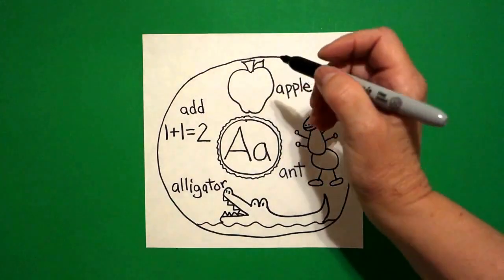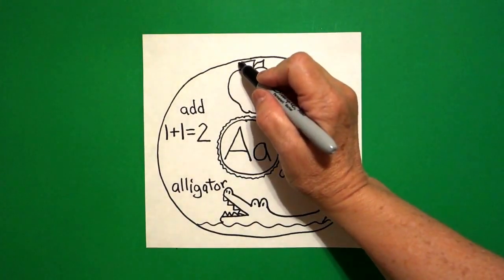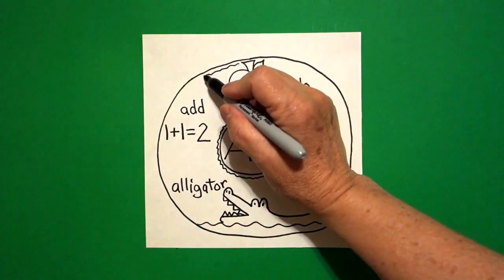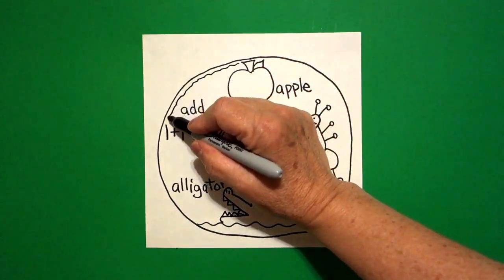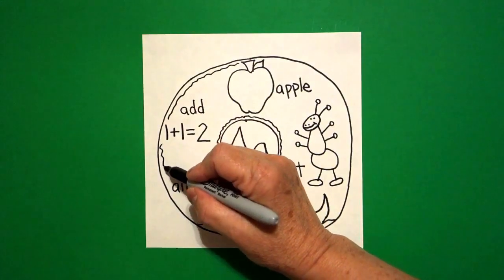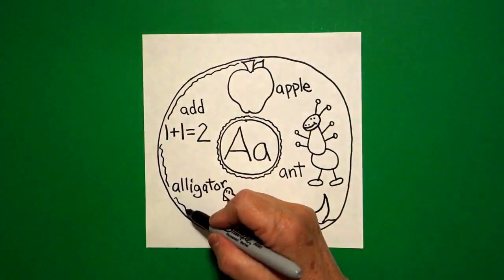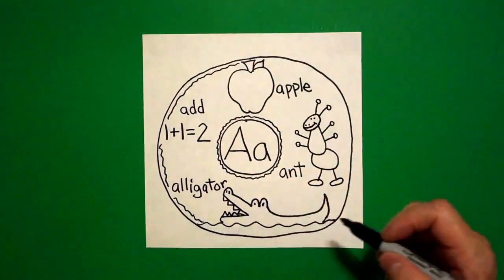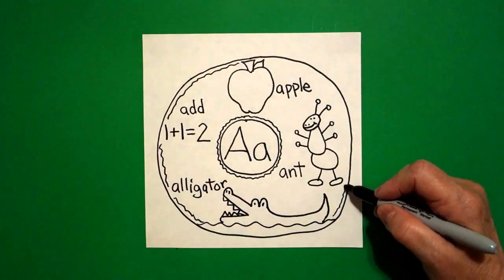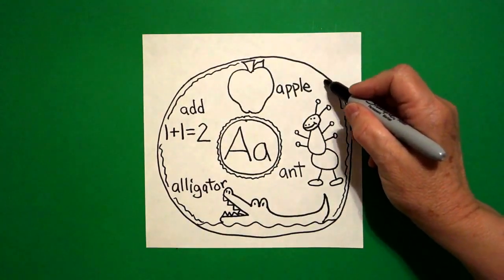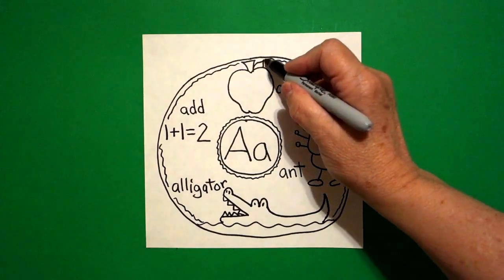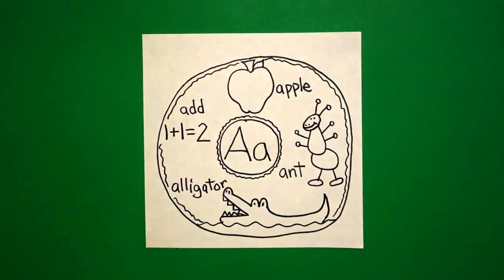Now, to make the donut look more like a donut, I come all the way up to the top and I draw that wavy, wavy line, jump over your drawings, don't draw through them, wavy, wavy line all the way down and around. Keep going. That's going to be the outside part of your donut.